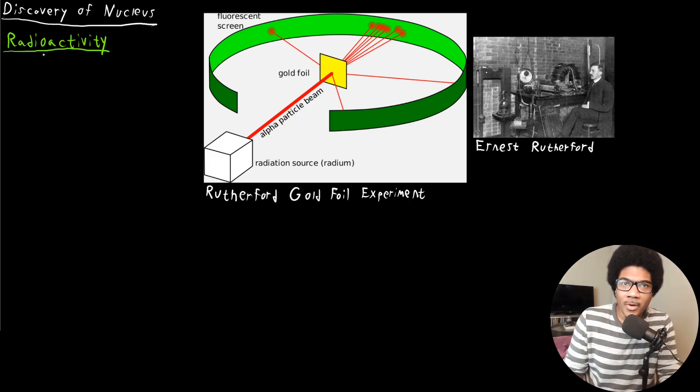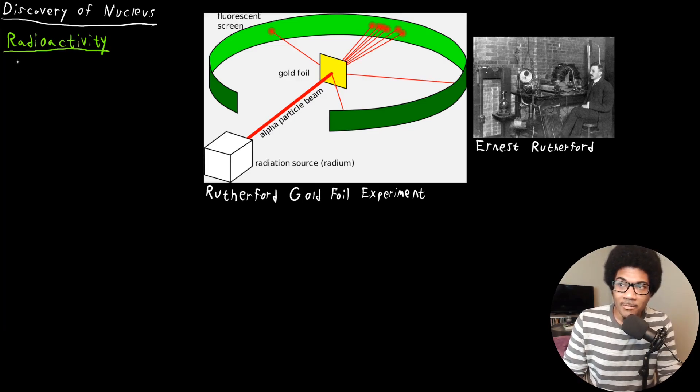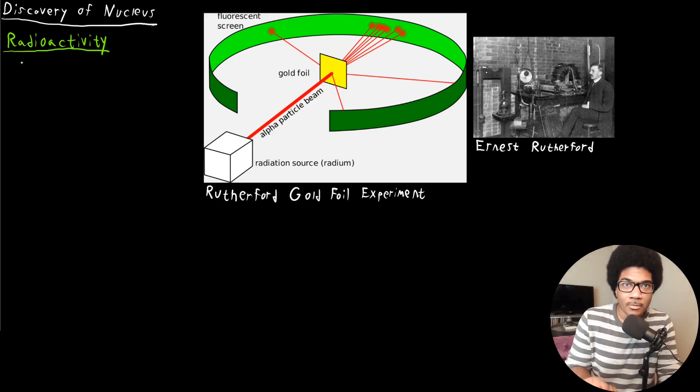Basically, radioactivity is the radiation that comes off of unstable atoms. And there's different types of radioactive particles that can be emitted. There's gamma particles, which are basically high energy light. There's beta particles, which are essentially like electrons. And there's alpha particles. And it's really important for us to understand alpha particles because they were used and central in the discovery of the nucleus.